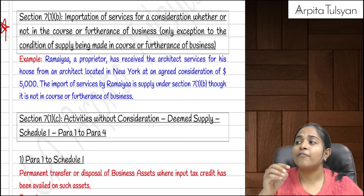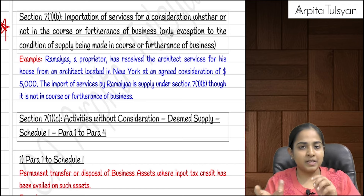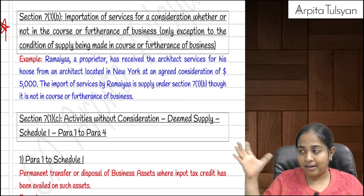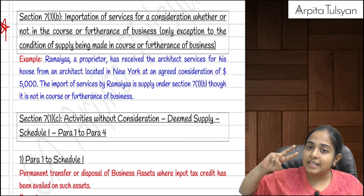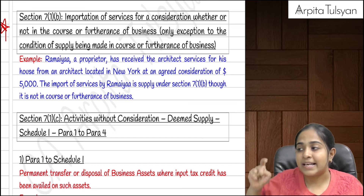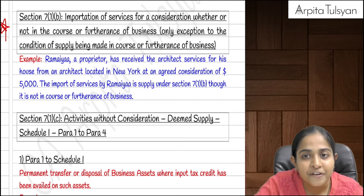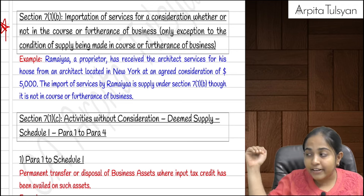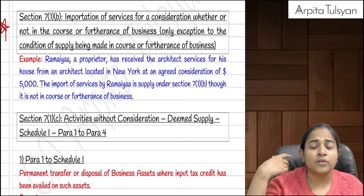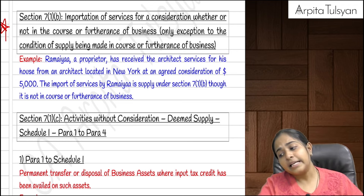A simple example: I wanted to get my house's interior decoration done, for which I took the services of an architect from outside India. This is for personal use. Still, whatever transaction I entered into with this architect will be considered a supply. This is an exception to 7(1)(a) — in 7(1)(a), the supply must be in the course of business, but in 7(1)(b), even personal-purpose imports of services are considered a supply.